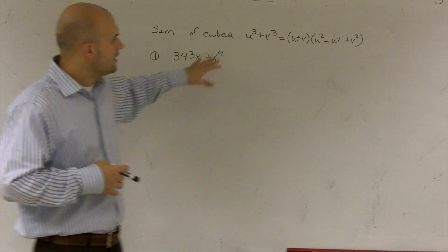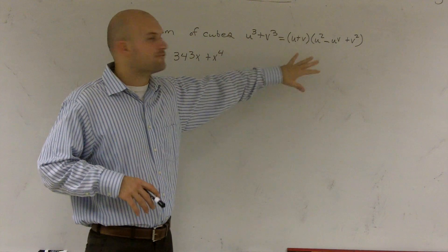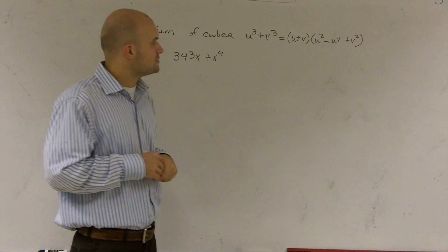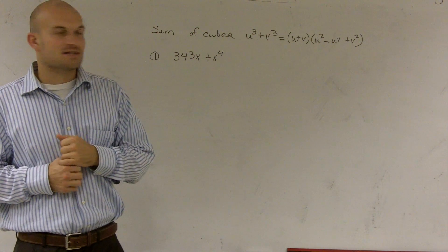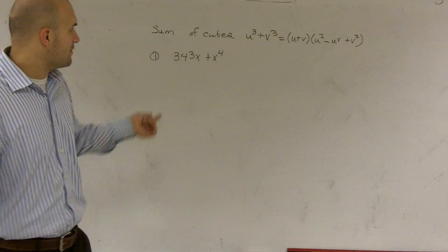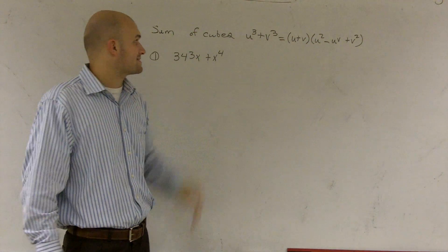So what we want to do is I have this little abstract kind of formula here that u cubed plus v cubed equals u plus v times u squared minus u times v plus v squared. So automatically what that's telling me is if I want to use the sum of cubes, I need to have something that looks like this.